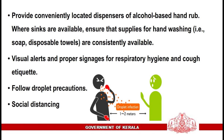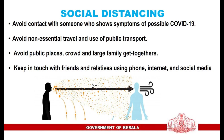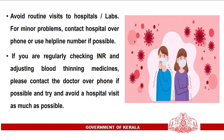Follow droplet precautions and practice social distancing. Avoid contact with someone who shows symptoms of possible COVID-19. Avoid non-essential travel and use of public transport, avoid public places, crowds, and large family gatherings. Keep in touch with friends and relatives using phone, internet, and social media. Avoid routine visits to hospitals or labs; for minor problems, contact the hospital over the phone or use a helpline number. If you regularly check INR and adjust blood-thinning medicines, contact the doctor over the phone if possible.